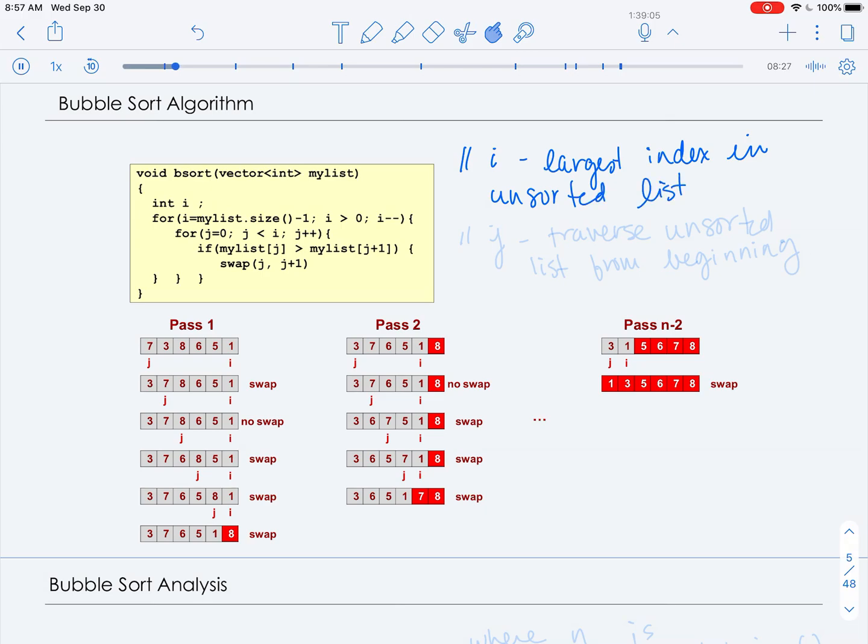We initialize i, and i is going to be the largest index in the unsorted list. So when we start off, you'll notice that we initialize i to be the very last position in the list, where we're going to bubble up the largest number.